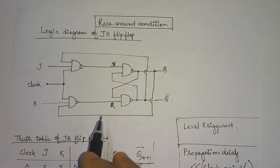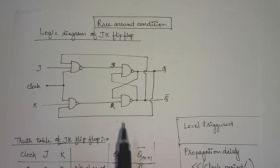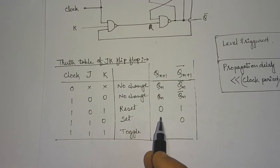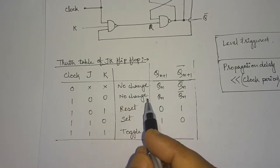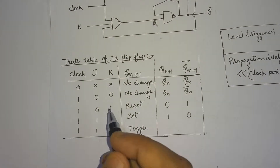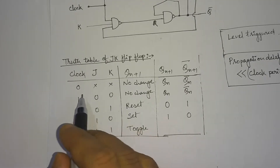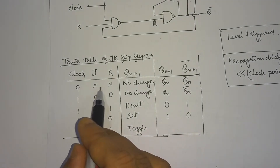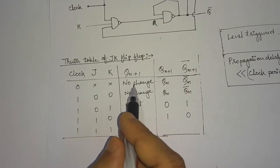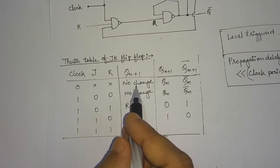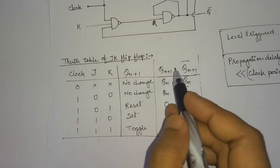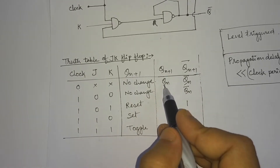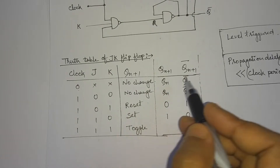This is the logic diagram using a NAND gate. For a JK flip-flop, the truth table is the same whether using a NAND gate or NOR gate. Whenever the clock is low, irrespective of the J and K inputs, we have no change in the output — the next state output will be the same as the present state output.